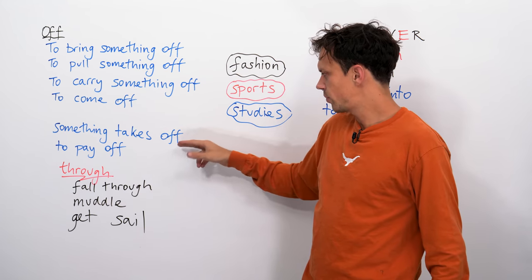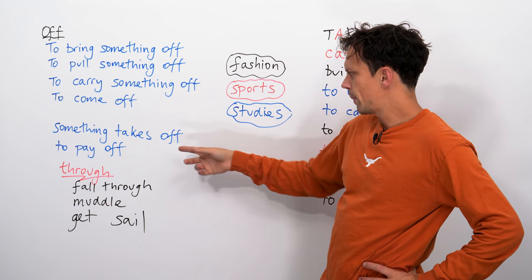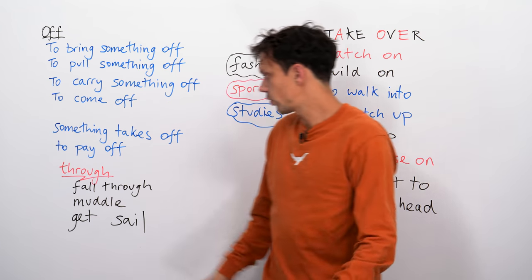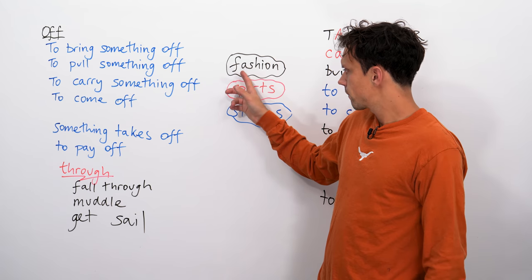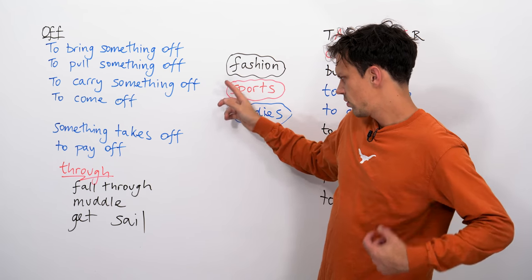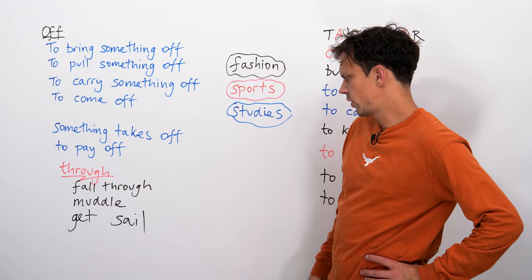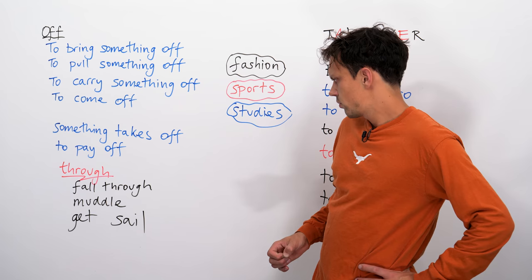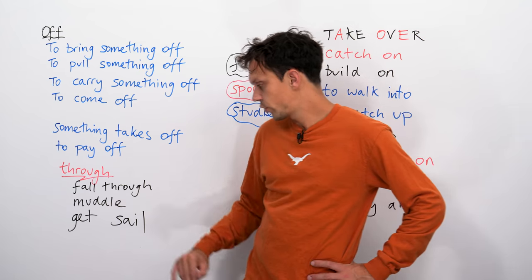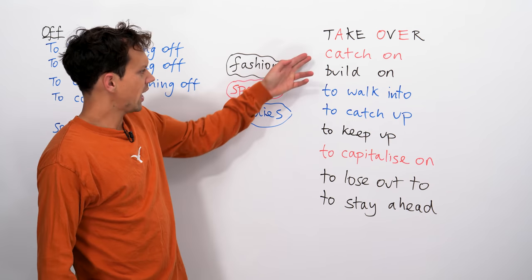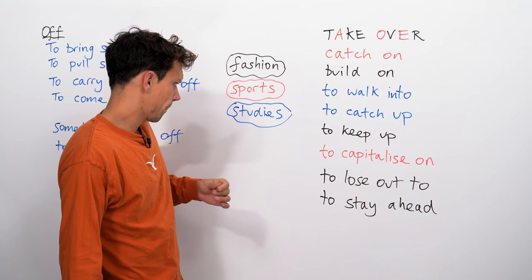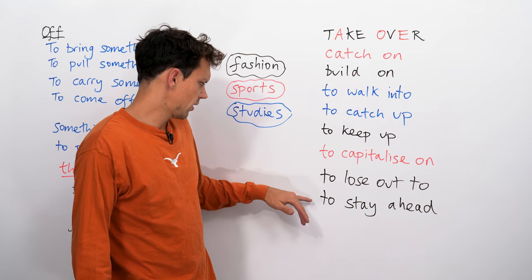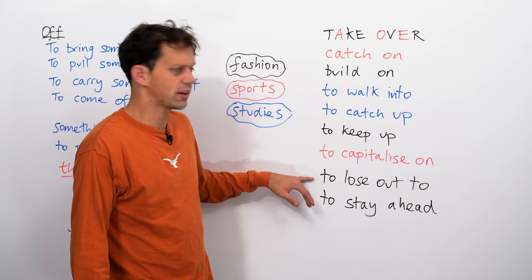If something takes off, then it becomes popular. So, fashion. Maybe if I start walking around with stripy socks and it takes off, then everyone starts wearing stripy socks. Doesn't really work with 'through' these ones unless you're talking about the business aspect of fashion. Yeah, a sales deal sailed through, but this is more the business area. To catch on, a fashion catches on. And then to capitalise on, again, more business-related, as would be to stay ahead and to lose out to, talking about competition.